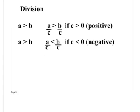Write these rules down — these are the rules for dividing with inequalities. We have A greater than B. If we're dividing by C and C is positive, the sign stays the same. If C is a negative number, you have to change the sign for this to remain true. Just like multiplication: if you're dividing or multiplying by a negative number, you have to change your sign.